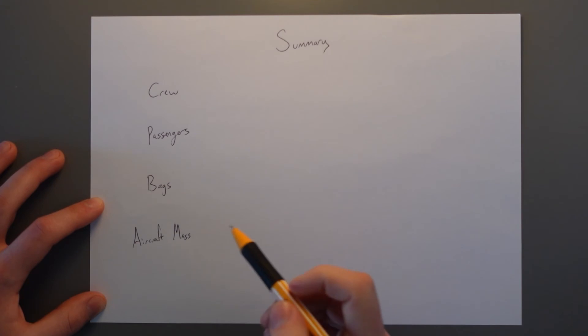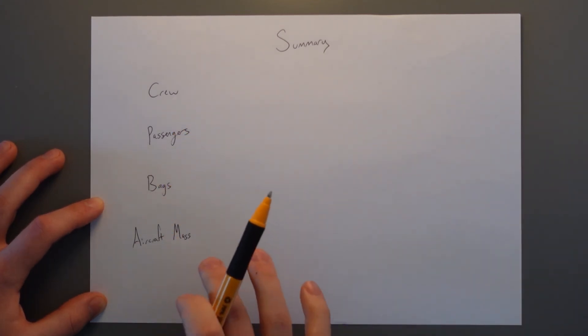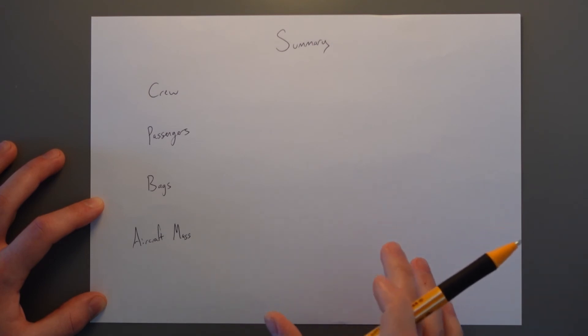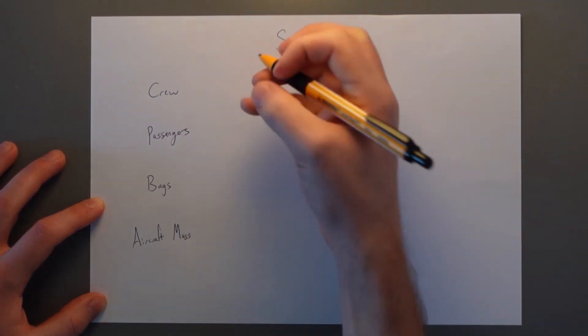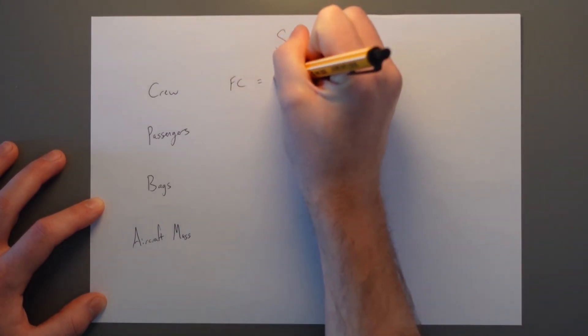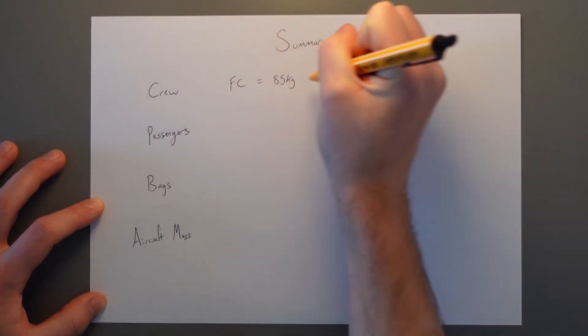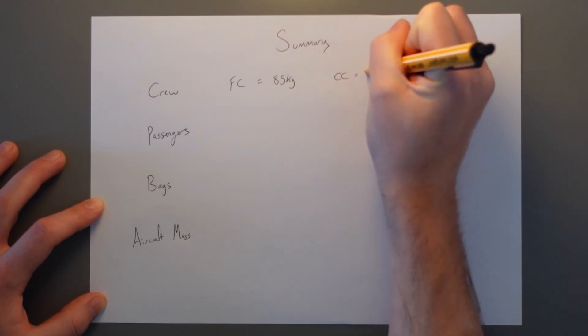So to summarize, we have standard masses for crew, passenger bags, and the aircraft mass. If you use that fleet average program, you're essentially using a standard mass applied across the whole fleet. So for crew, we've got flight crew, 85 kilograms. Cabin crew, 75 kilograms. Simple.